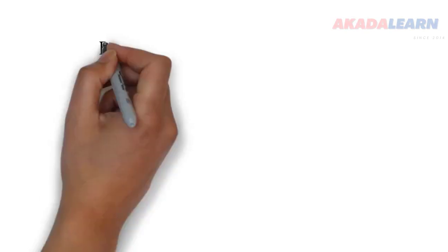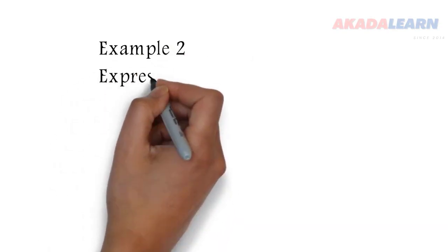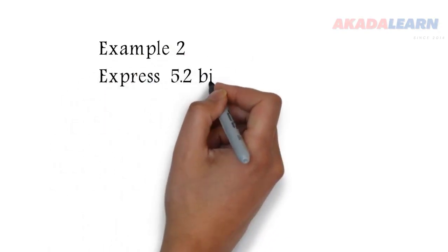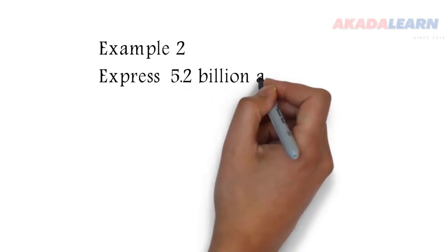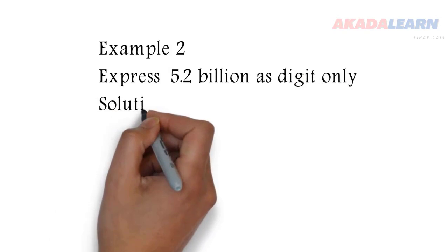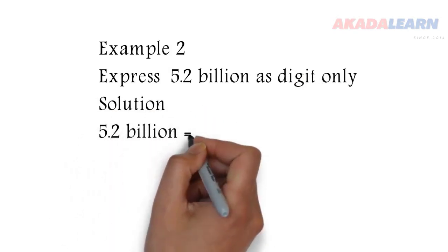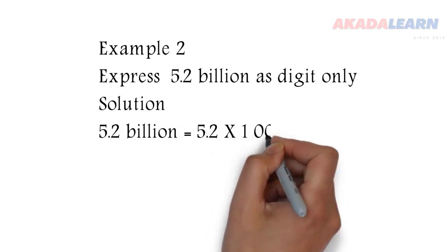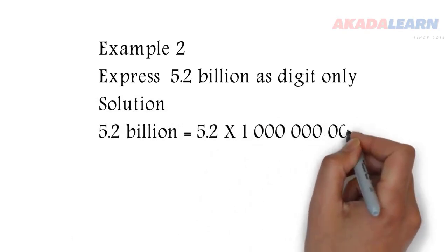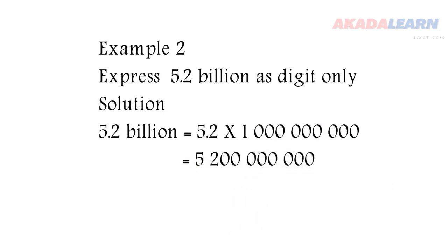Let's see another example. Example 2: Express 5.2 billion as digits only. Solution: 5.2 billion is the same as 5.2 times 1 billion. When we do the multiplication, we get 5,200,000,000.